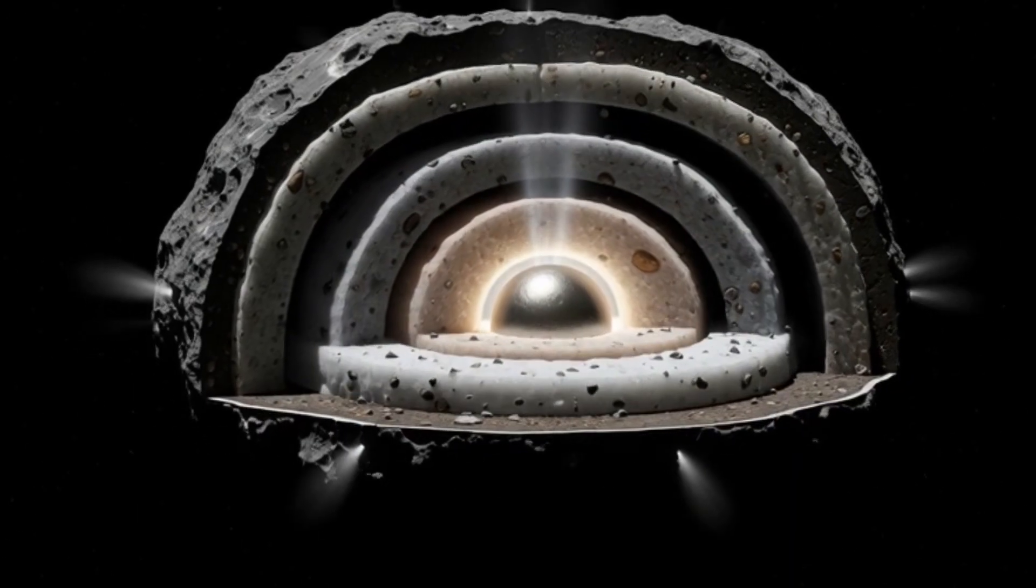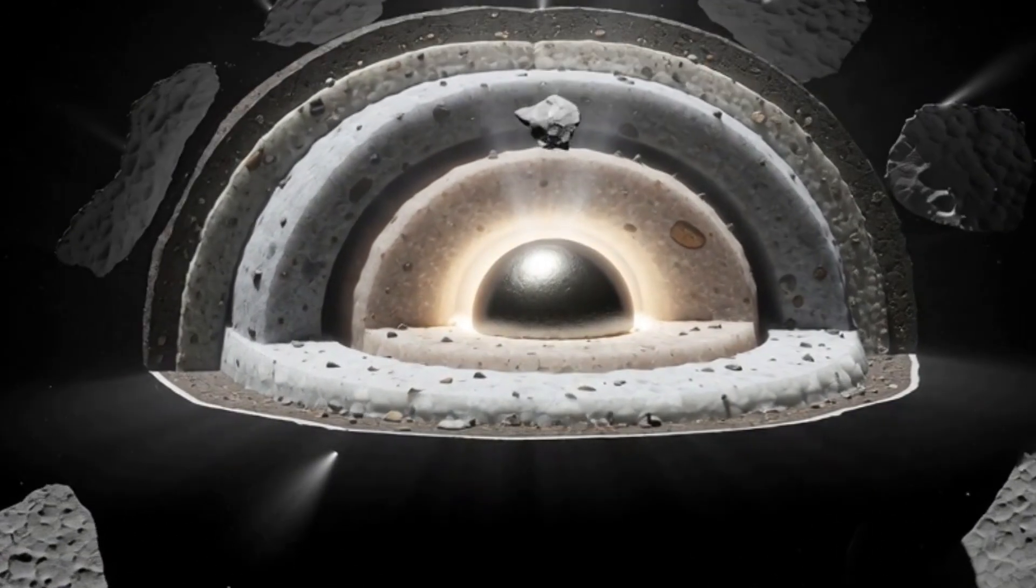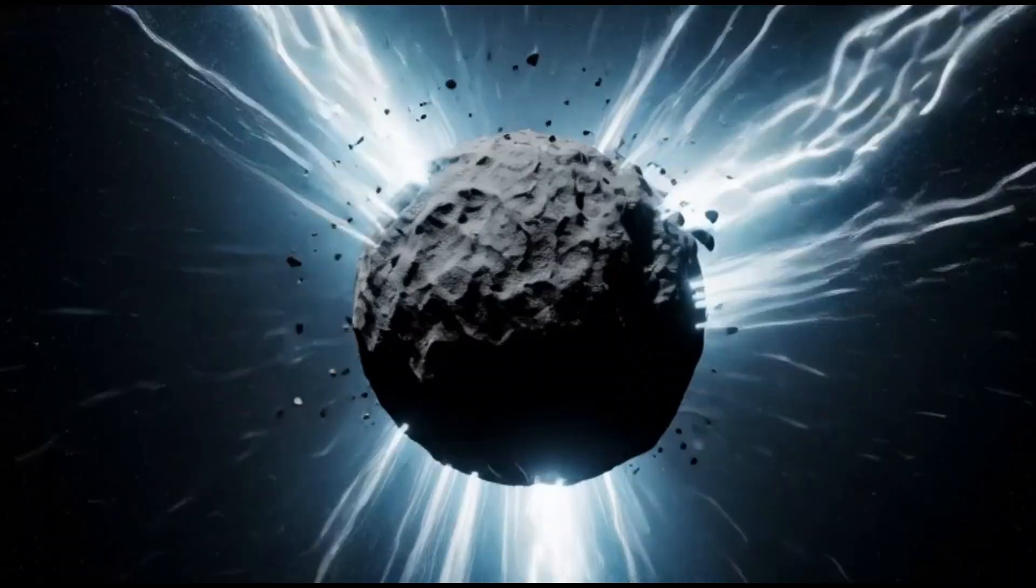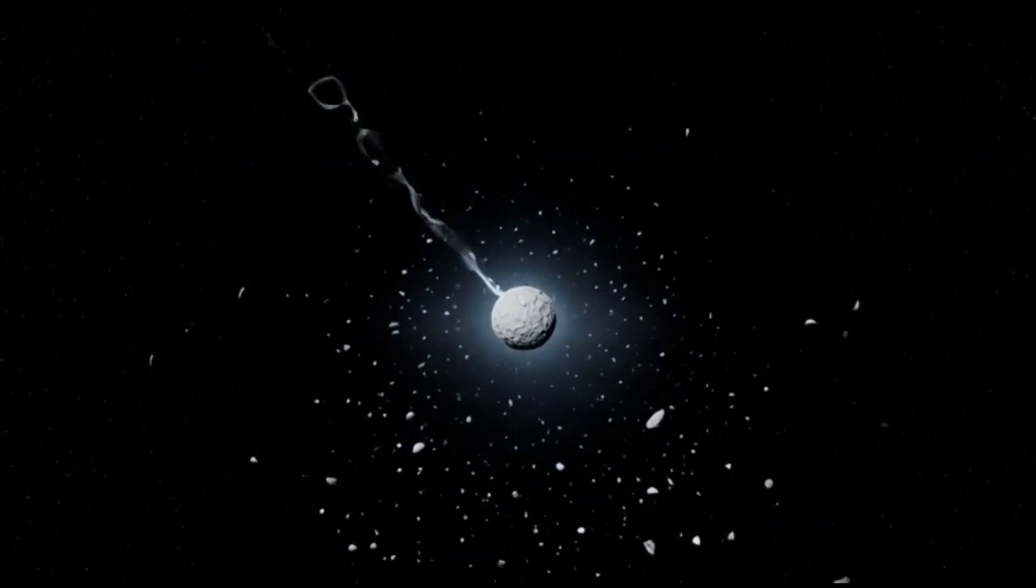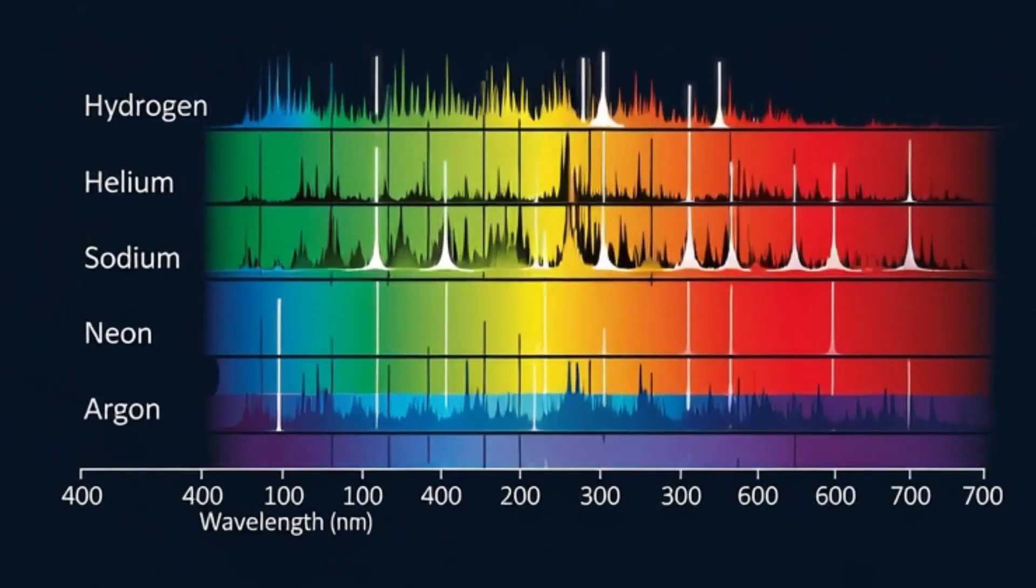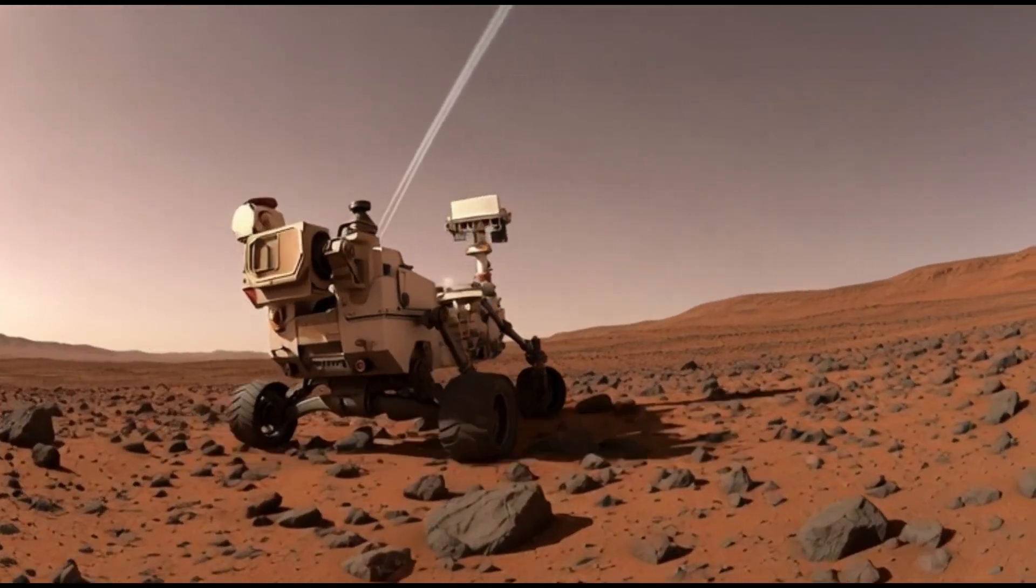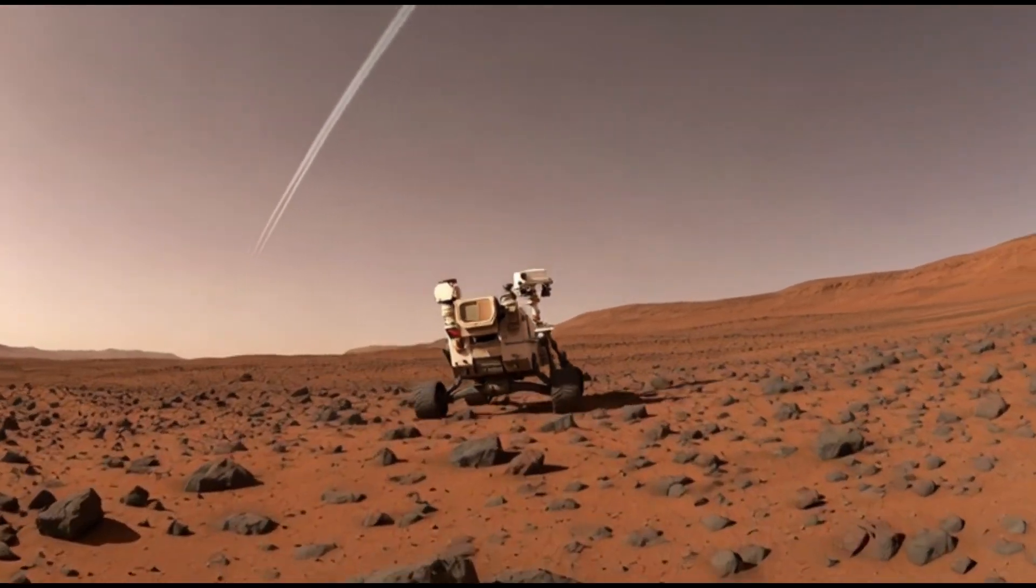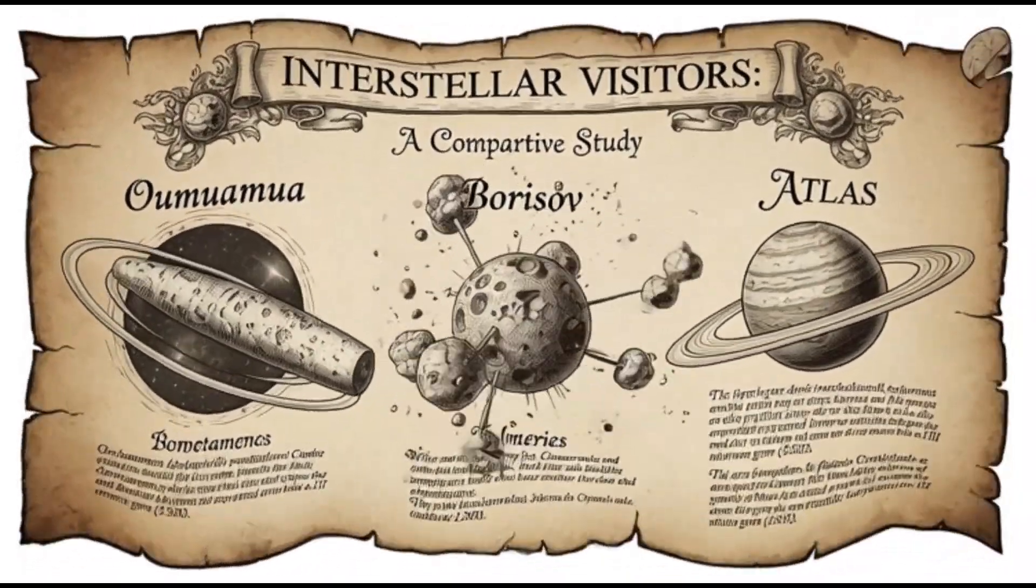It carries materials older than our planet, forged in a region of the galaxy untouched for billions of years. Some of those grains might predate the sun itself. By studying how it behaves, the gas it releases, the way its light scatters, the path it takes, we're getting a glimpse into how other solar systems form and what might be hiding out there among the stars.